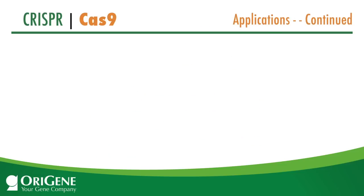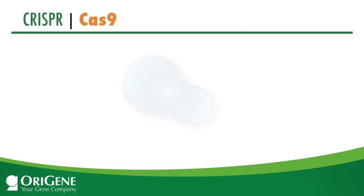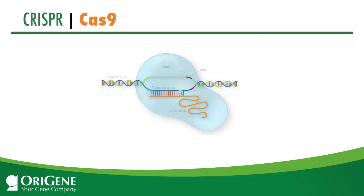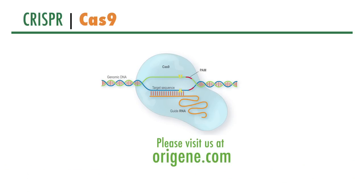Another common application is the safe harbor insertion of transgenes. Compared to other transgene insertion methods, this method provides total control for insertion site, orientation, as well as copy number. A ready-to-use kit for this application is coming soon from ORAGENE as well. ORAGENE brings you a complete CRISPR-Cas9 solution that is simple and easy to use. To learn more, please visit the ORAGENE website.